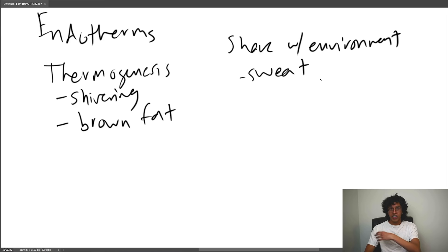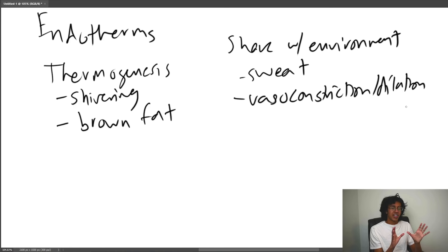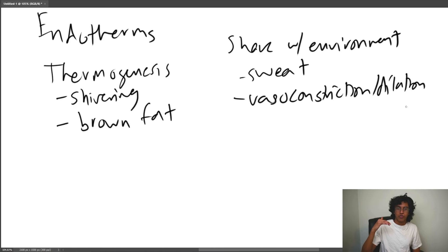There's also vasoconstriction and vasodilation — making your veins bigger or smaller to control how much heat is exchanged with the environment. For example, in rabbit ears you can see their veins. On a hot day, they can dilate blood vessels in their ears so more heat enters their blood and warms them up. If they're getting too hot, they constrict those vessels so less heat is exchanged.